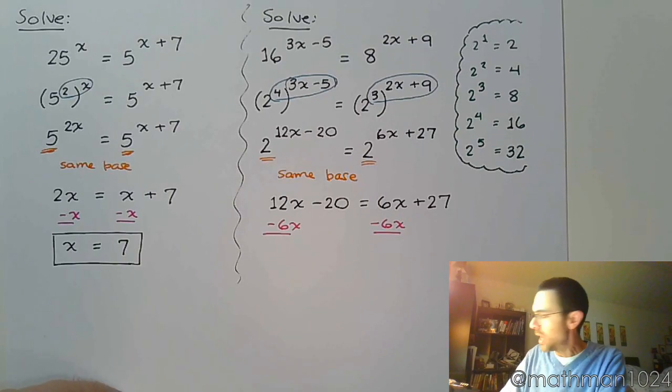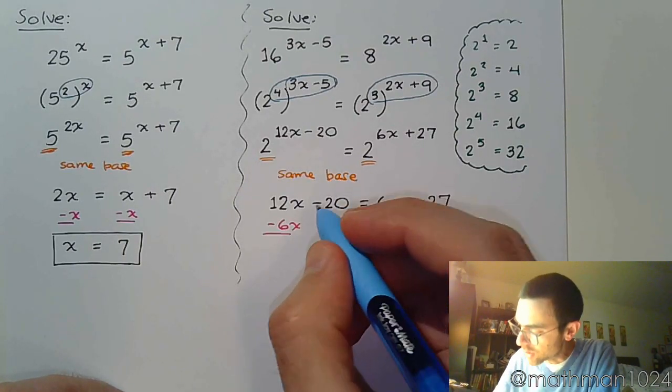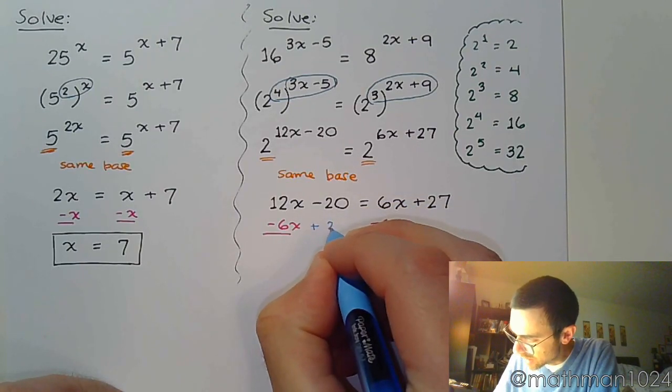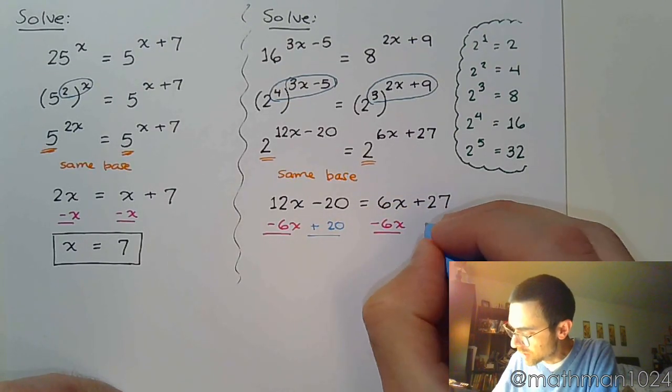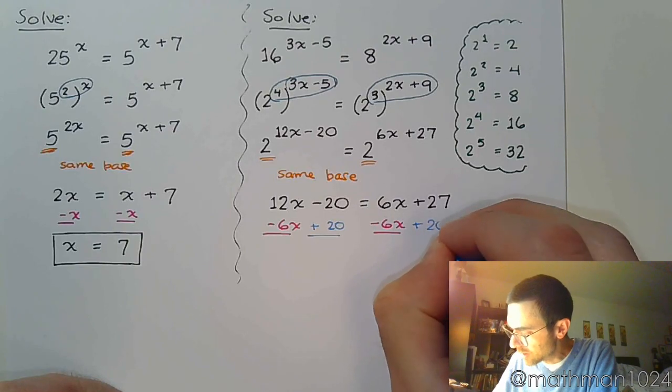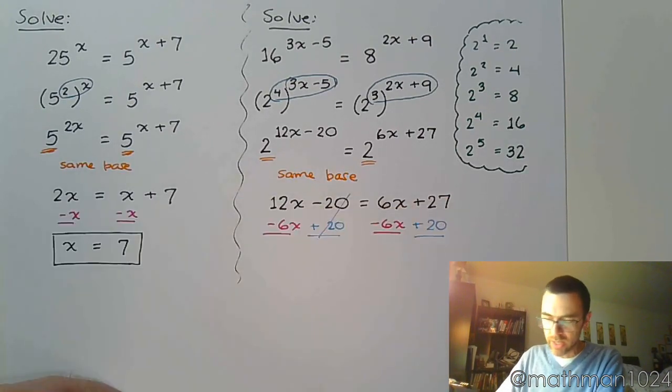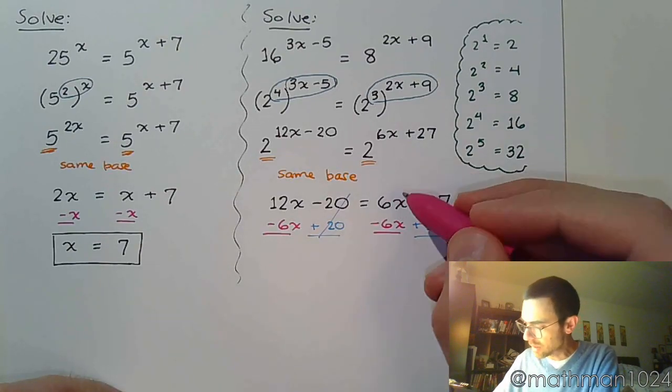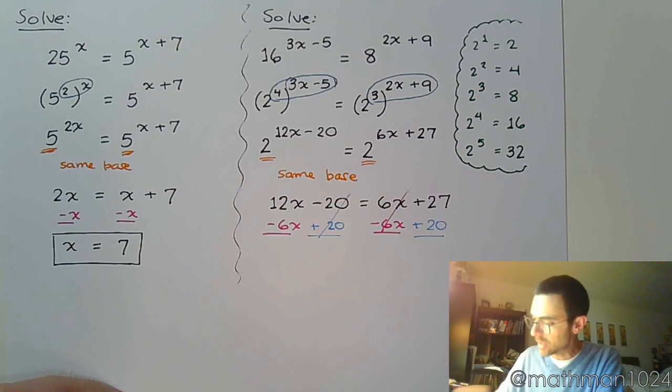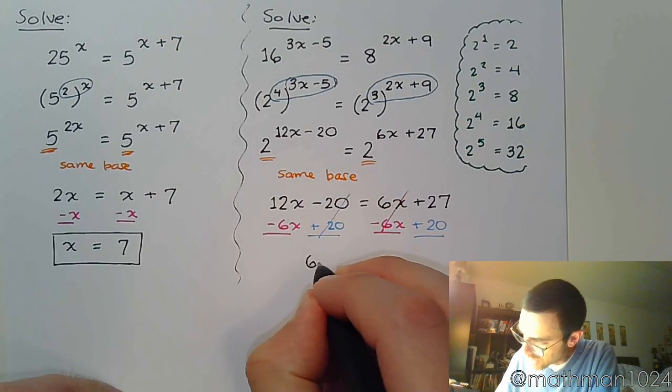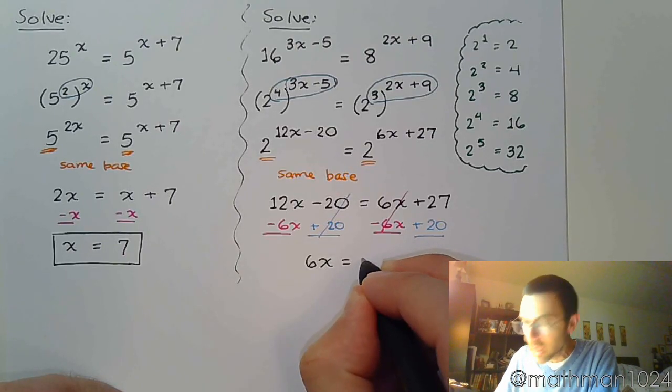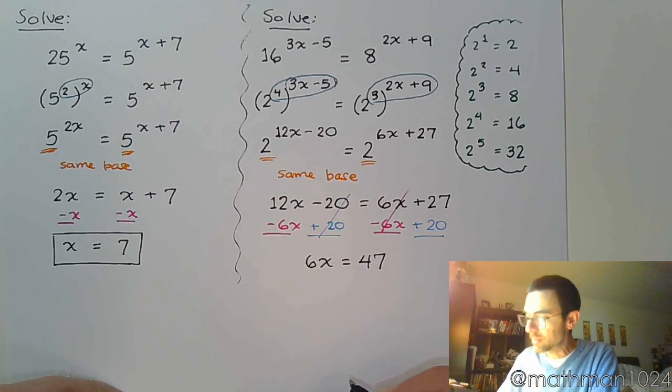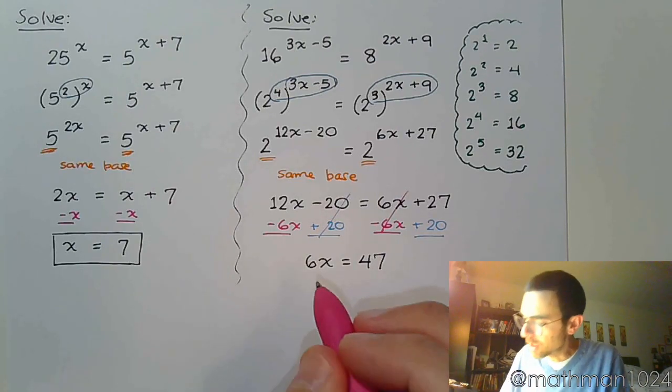While we're at it, let's move the constants to the other side, so I'm going to add 20. Those guys reduce, the 6x is reduced, I'm left with 6x on the left and I have 47 on the right.